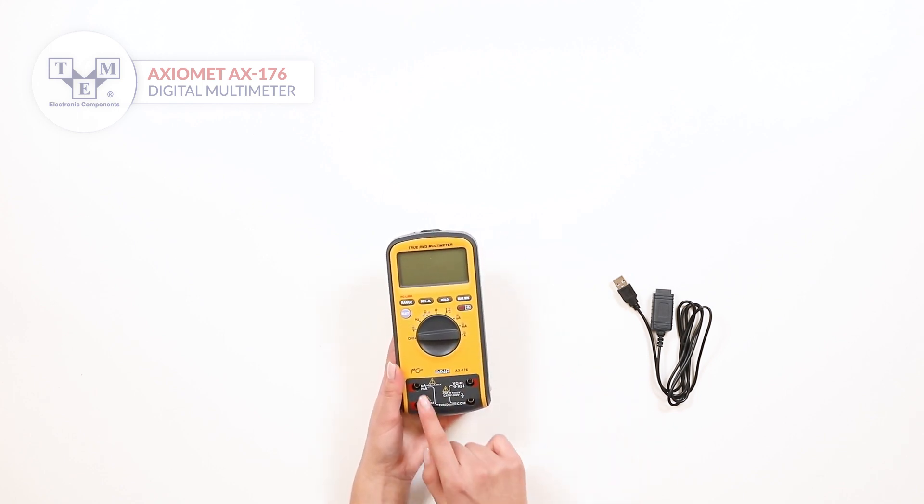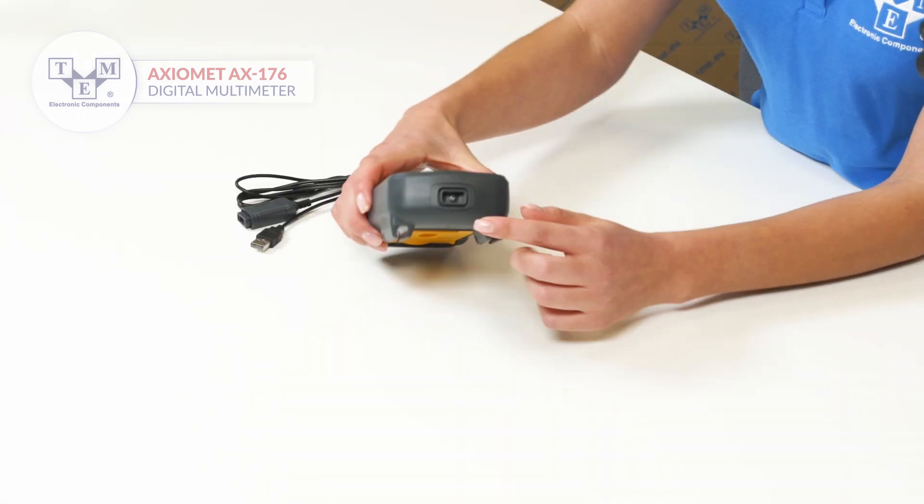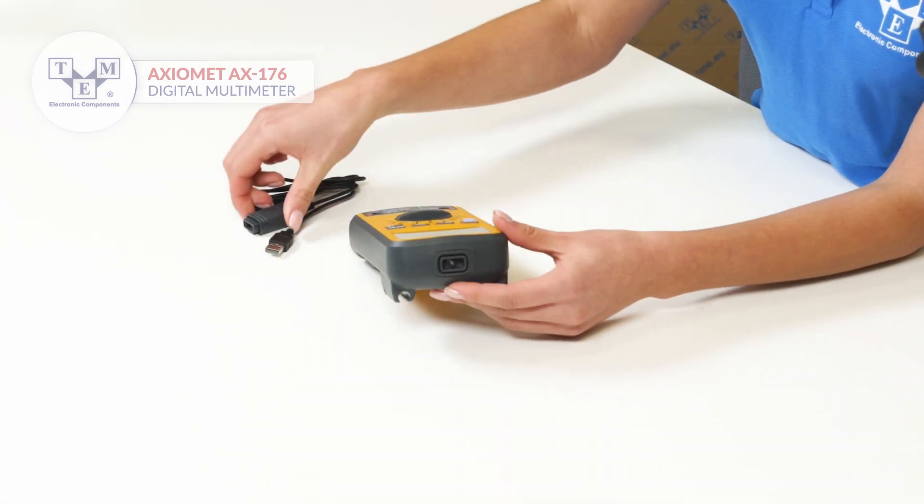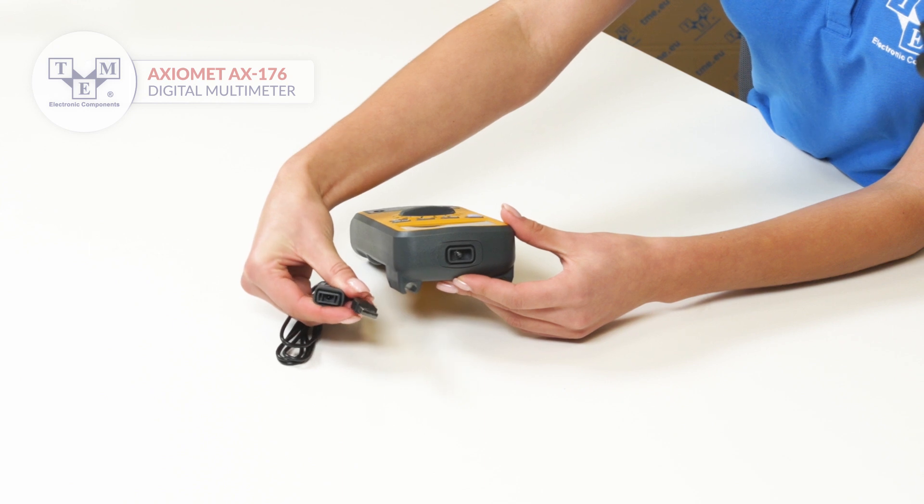For low currents, the user has milli and micro ranges. Use the interface on the top of the meter in order to communicate with a PC.